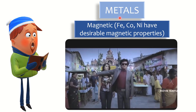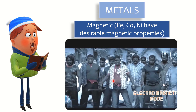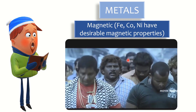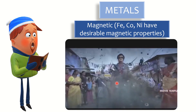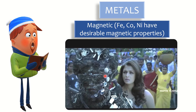Coming to metals in magnetic properties — metals are good in magnetic properties, that means they have good magnetism. In fact, iron, cobalt, and nickel have very desirable magnetic properties. This robot is made up of metal alloys where it can exhibit magnetic properties and attract all metal things towards it because of the magnetic property.